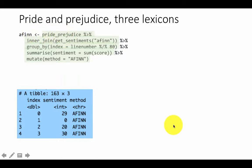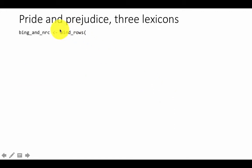NRC and Bing both classify sentiments differently from AFINN. Bing classifies sentiments as simply positive or negative, so we'll do the net positive versus negative calculation. NRC classifies sentiments in many different ways, associating very specific sentiment words with every word, but among those it has two categories called positive and negative, which is what we'll use.